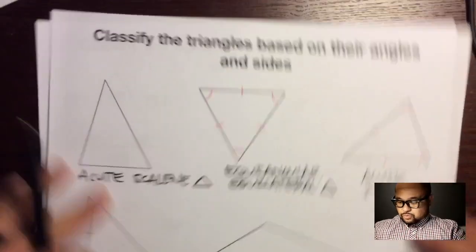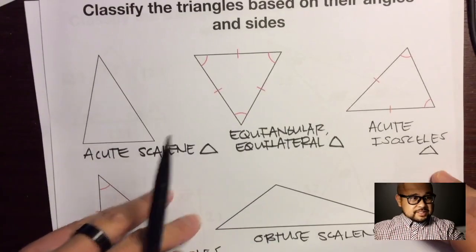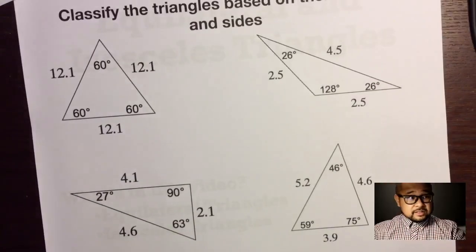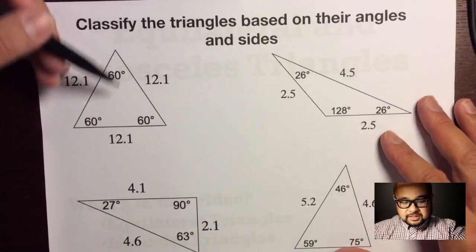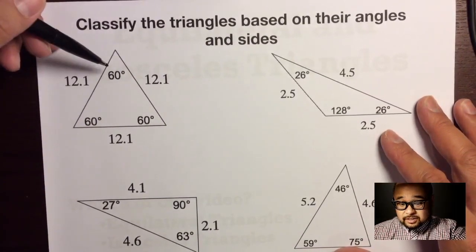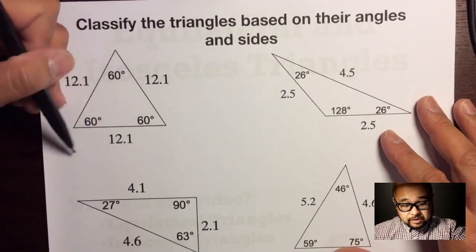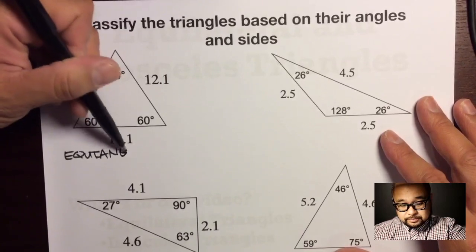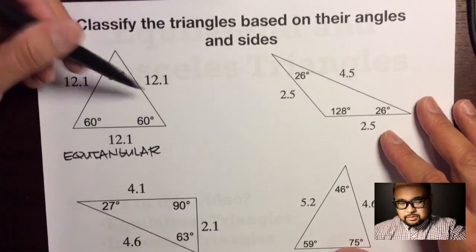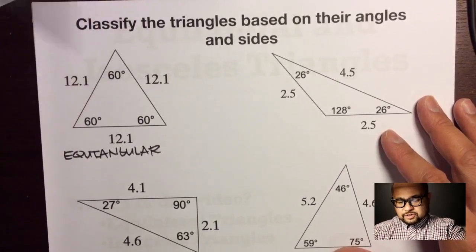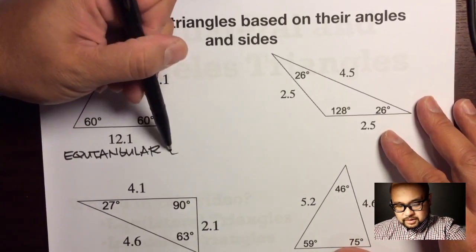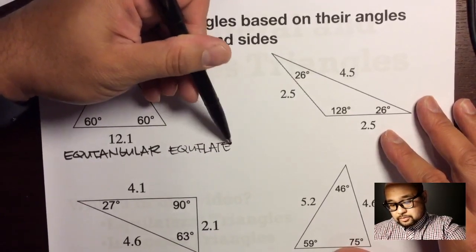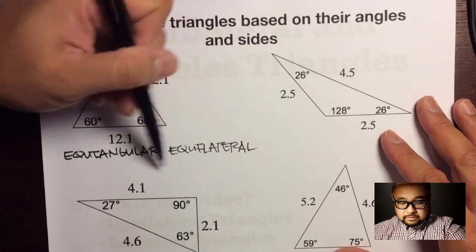Now let's try examples using actual numbers instead of arc and tick mark symbols. For this triangle, all angles are 60 degrees — they're all congruent — so it's equiangular. And since it's equiangular, it's also equilateral, with all sides measuring 12.1. So this is an equiangular equilateral triangle.